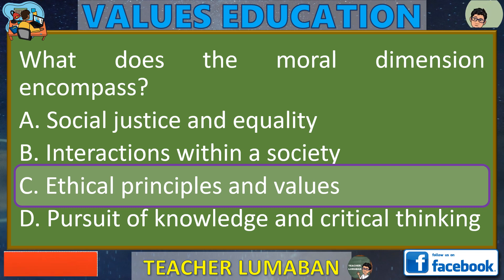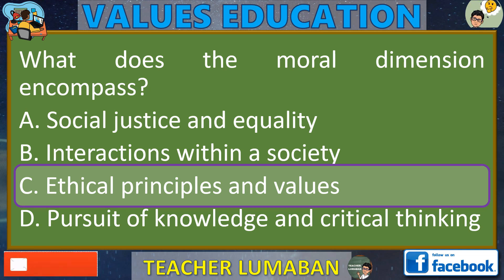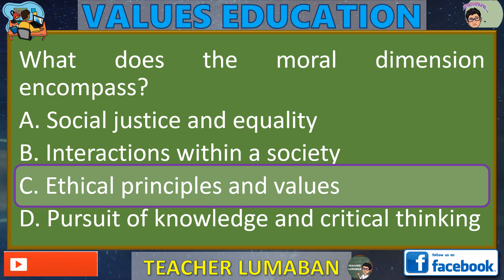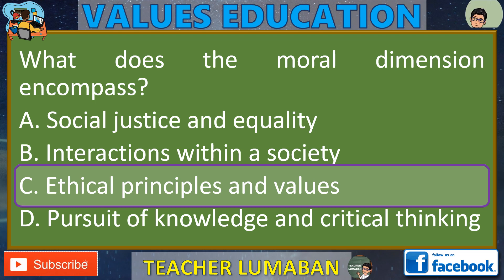Therefore, option C, Ethical Principles and Values, is the most accurate and encompassing choice to describe the moral dimension. It reflects the broader scope of moral decision-making and the consideration of ethical principles in personal and societal choices. Sa makatuwid, ang option C, mga etikal na prinsipyo at halaga, ay ang pinakatumpak at sumasaklaw na pagpipilian upang ilarawan ang moral na dimensyon. Sinasalamin nito ang mas malawak na saklaw ng moral na paggawa ng desisyon at ang pagsasaalang-alang ng mga prinsipyong etikal sa mga personal at panlipunang pagpili.